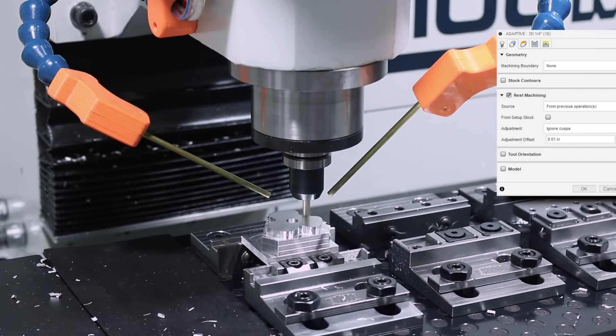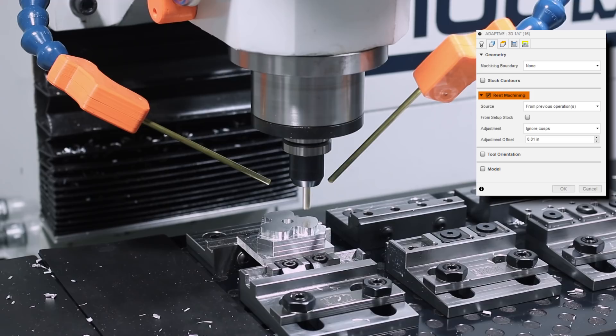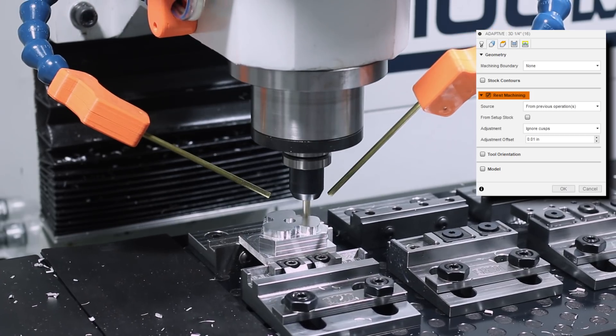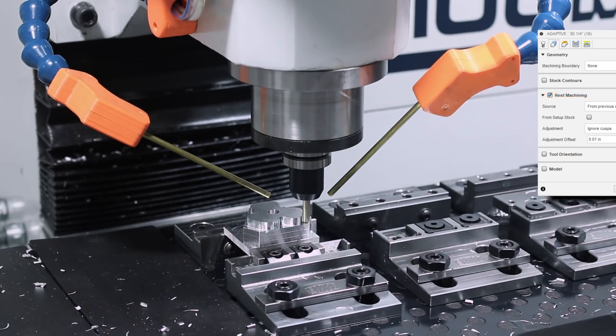Then another adaptive, same speeds and feeds, only this time 3D so we can take advantage of rest machining and clean up these three corners that the shear hog couldn't quite get all the way into.